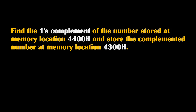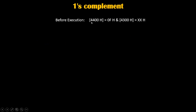Hello friends, today we are going to learn a program to find the one's complement of a number stored at memory location 4400h and store the complemented number at memory location 4300h. Before execution, let's say memory location 4400h holds the random value 0Fh, and we want its one's complemented value to be stored at 4300h.